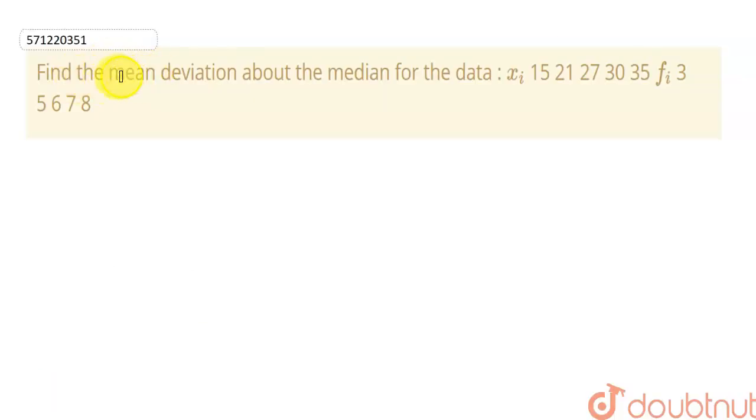So students, in this question, we have to find the mean deviation about the median of the data given to us. x_i values are given as 15, 21, 27, 30 and 35.